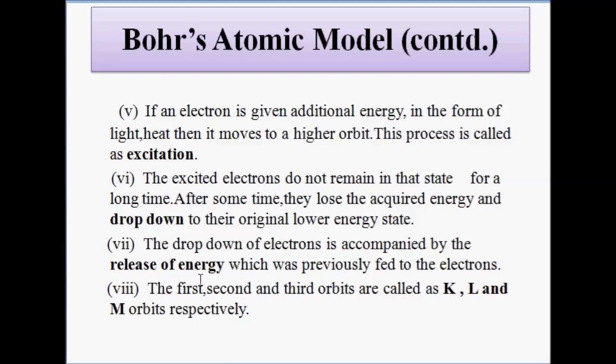The first, second, and third orbits, which act as circular pathways for electrons revolving around the nucleus, are called the K, L, and M orbits respectively. This atomic model is similar to our solar system — just as the eight planets revolve around the sun, and as artificial satellites revolve around the Earth, electrons revolve around the positively charged nucleus with a combination of centrifugal and centripetal force.